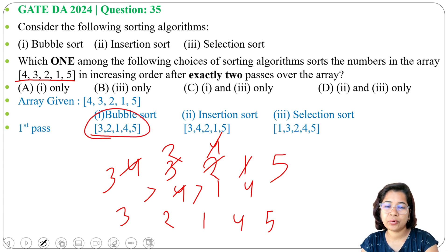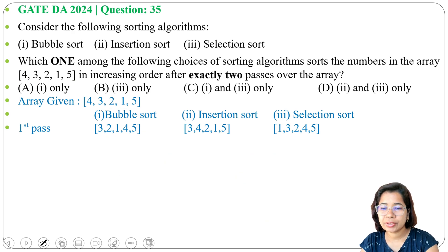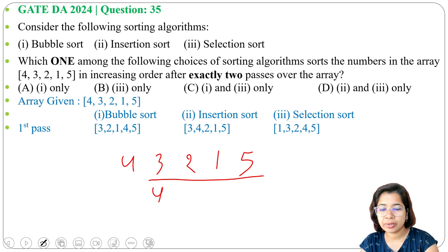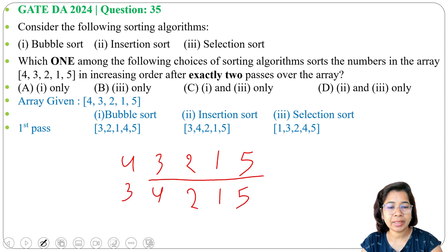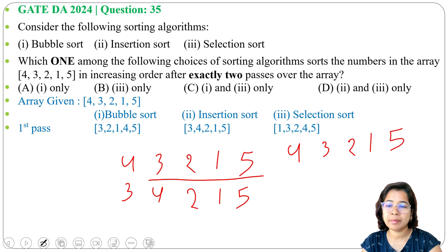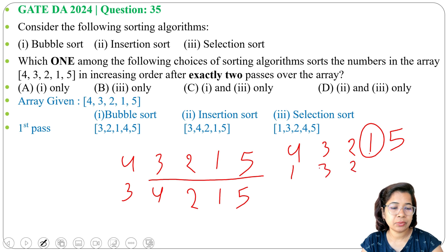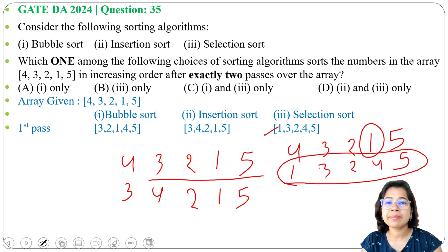For insertion sort pass 1: is 3 less than 4? Yes, so 4 comes here and 3 comes here — giving 3 4 2 1 5. For selection sort pass 1: array is 4 3 2 1 5, minimum is 1, swap with 4 — giving 1 3 2 4 5. First pass done for all three: bubble sort gives 3 2 1 4 5, insertion sort gives 3 4 2 1 5, selection sort gives 1 3 2 4 5.